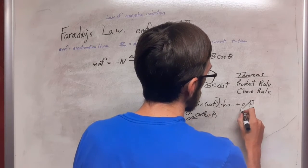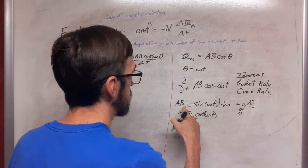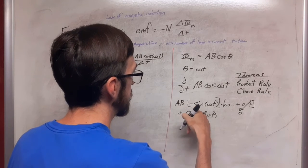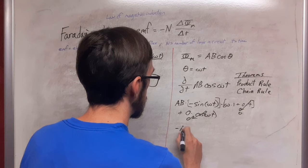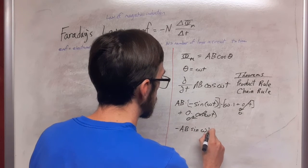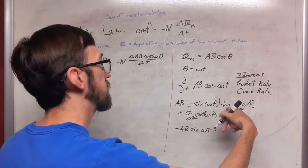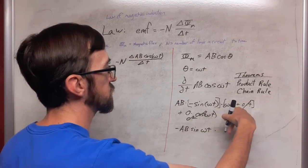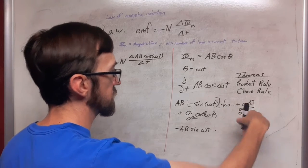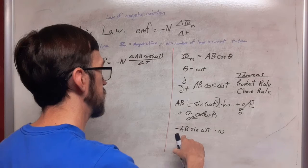This goes to 0. So simplifying this, we have AB times negative sine is going to be negative AB sine omega t times what's left in here. We have omega times 1 is omega plus 0 is omega. So this is being multiplied by this.